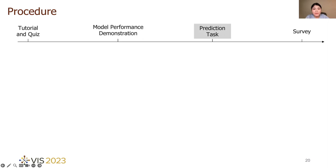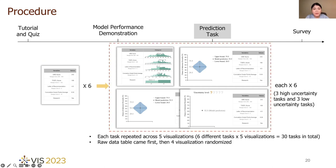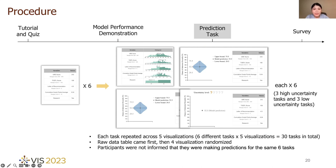After training in model demonstration phase, participants started to do 30 main prediction tasks with five visualizations, which actually only consist of three unique high uncertainty tasks and three unique low uncertainty tasks. They firstly saw six tasks under table condition, and then they encountered other 24 tasks with four visualizations in a randomized order. In this phase, participants were not informed that they were making predictions for the same six tasks differing only in the visualization, and they were not informed the ground truth after each task. Also, tasks were presented in a randomized order in this phase.